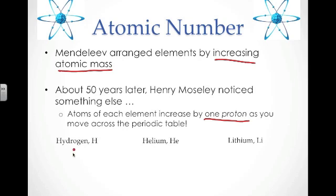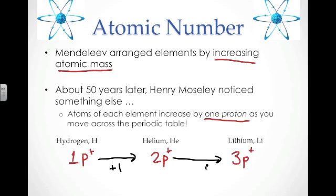An example of this is hydrogen, which has one proton. Helium has two protons. Lithium has three protons. These are the first three elements on the periodic table. So when I go from the first to the second, I increase by one proton. When I go from the second to the third, I increase by one proton. That was something that Moseley recognized and something that was really important to us today as we examine the periodic table.